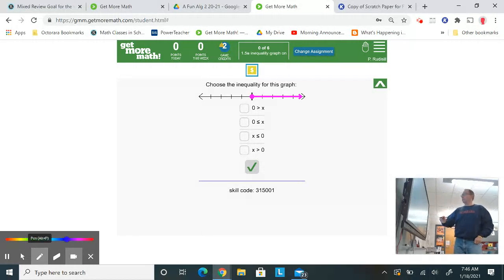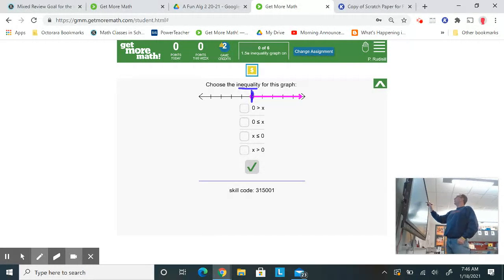So here it says to choose the inequality for this graph. Now this thicker bar represents 0, so you just got to recognize that. And notice that it's shaded, it's a thick pink circle, and everything to the right. So all the numbers that are shaded represent the x. And all those numbers are greater than or equal to 0. So I'm looking for that on my list, and I don't see it.